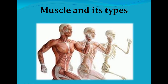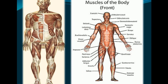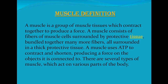So muscles and its types are the topic today. Let's start the video. As you can see the muscles of the body — the front side of the body shows muscles like the deltoid and frontal strap.